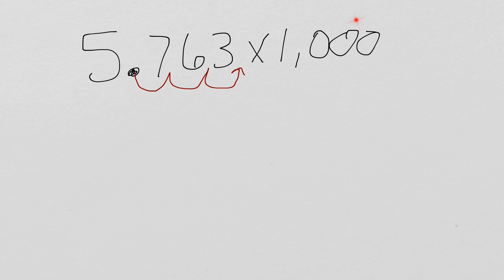And some people like to think, oh, I've got three zeros, so I'm going to move it three places. That's one way you can think of it. It works. So, our answer ends up being 5,763.